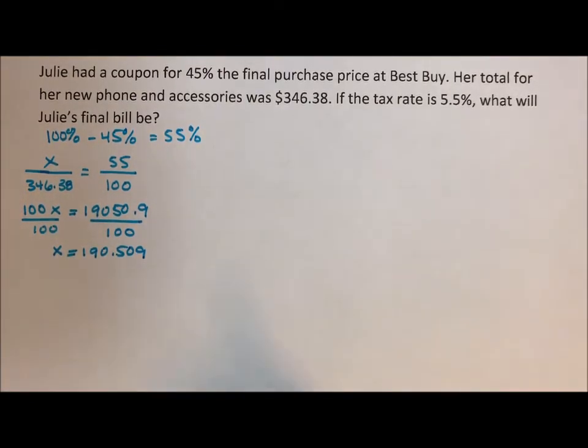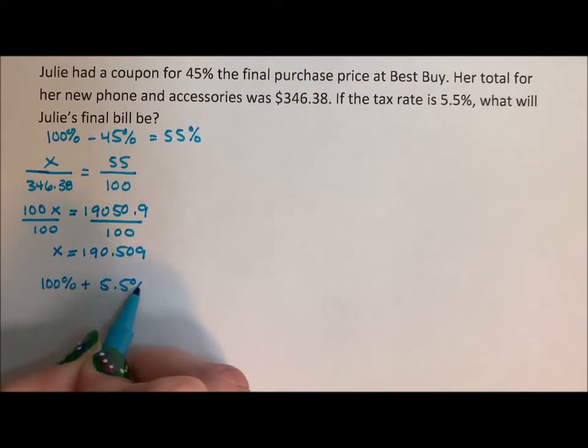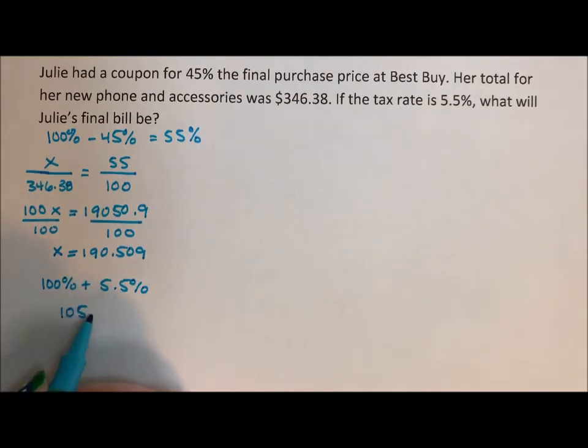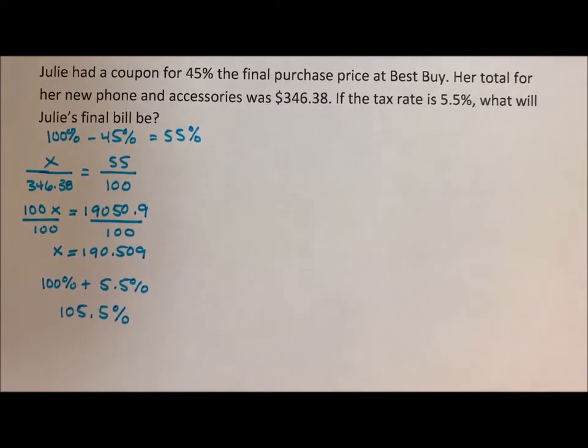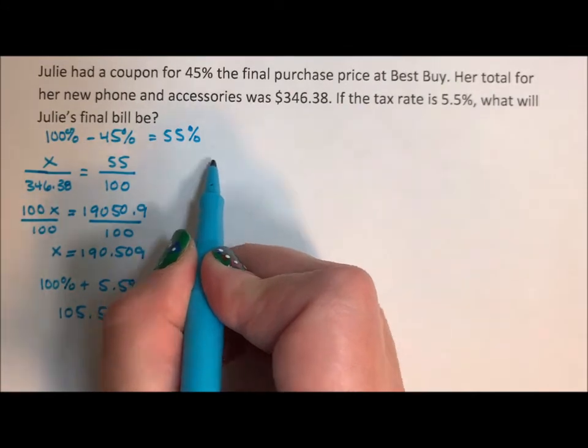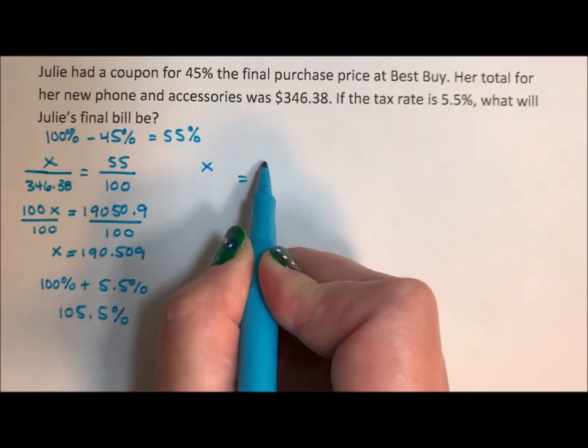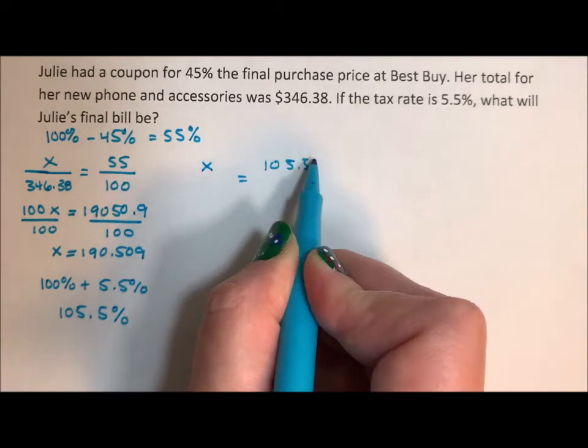We then want to figure out the tax. Well, the tax is 5.5%. But it's really 100% plus 5.5%. So when you're paying tax, you're really paying 105.5%. So we're going to set up that same kind of proportion again. So we have 105.5 over 100.